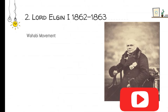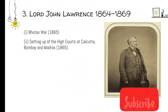The second Viceroy was Lord Elgin I, whose term was of only one year, from 1862 to 1863. During his term, the Wahhabi movement occurred — it was a Muslim reform movement. It was a small term and nothing more significant happened.